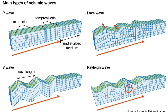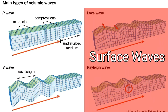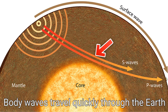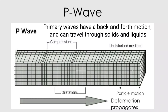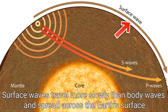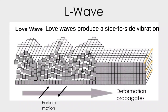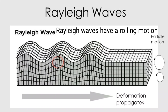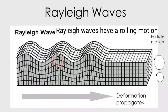The waves of an earthquake have distinctive patterns and can be split into two categories: body waves and surface waves. Body waves can travel through the body of the earth, and consist of primary waves, or P waves, which travel faster and have a back-and-forth motion like a vibrating spring, and secondary waves, or S waves, which travel slower and have a more snake-like motion. Surface waves travel slower than body waves and spread across the earth's surface. Love waves produce a side-to-side vibration, whereas Rayleigh waves move with an up-and-down rolling motion not too dissimilar to ocean waves. It's these surface waves that typically deal the most destruction.